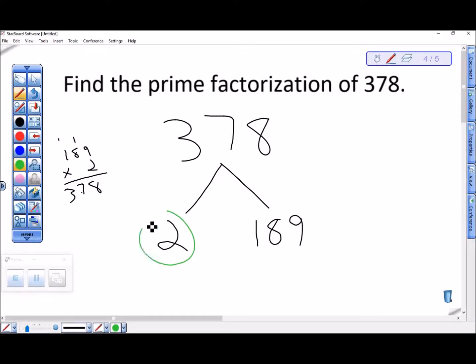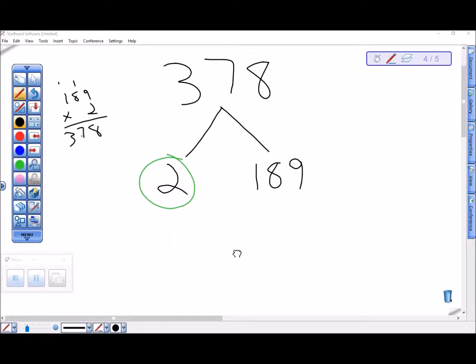Now 2 is prime, but I'm pretty sure 189 is not. In fact, looking at 189, I see that it must be divisible by 9 because 18 is divisible by 9 and so is 9.